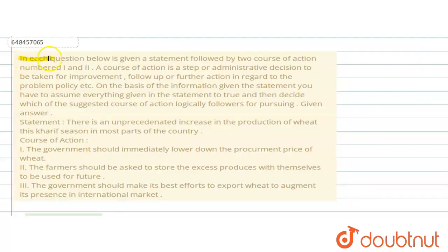The question says, in each question below is given a statement followed by two courses of action numbered 1 and 2. A course of action is a step or administrative decision to be taken for improvement, follow up or further action in regard to the problem or policy. On the basis of information given in the statement, you have to assume everything true and then decide which of the suggested courses of action logically follow for pursuing. Give answer.